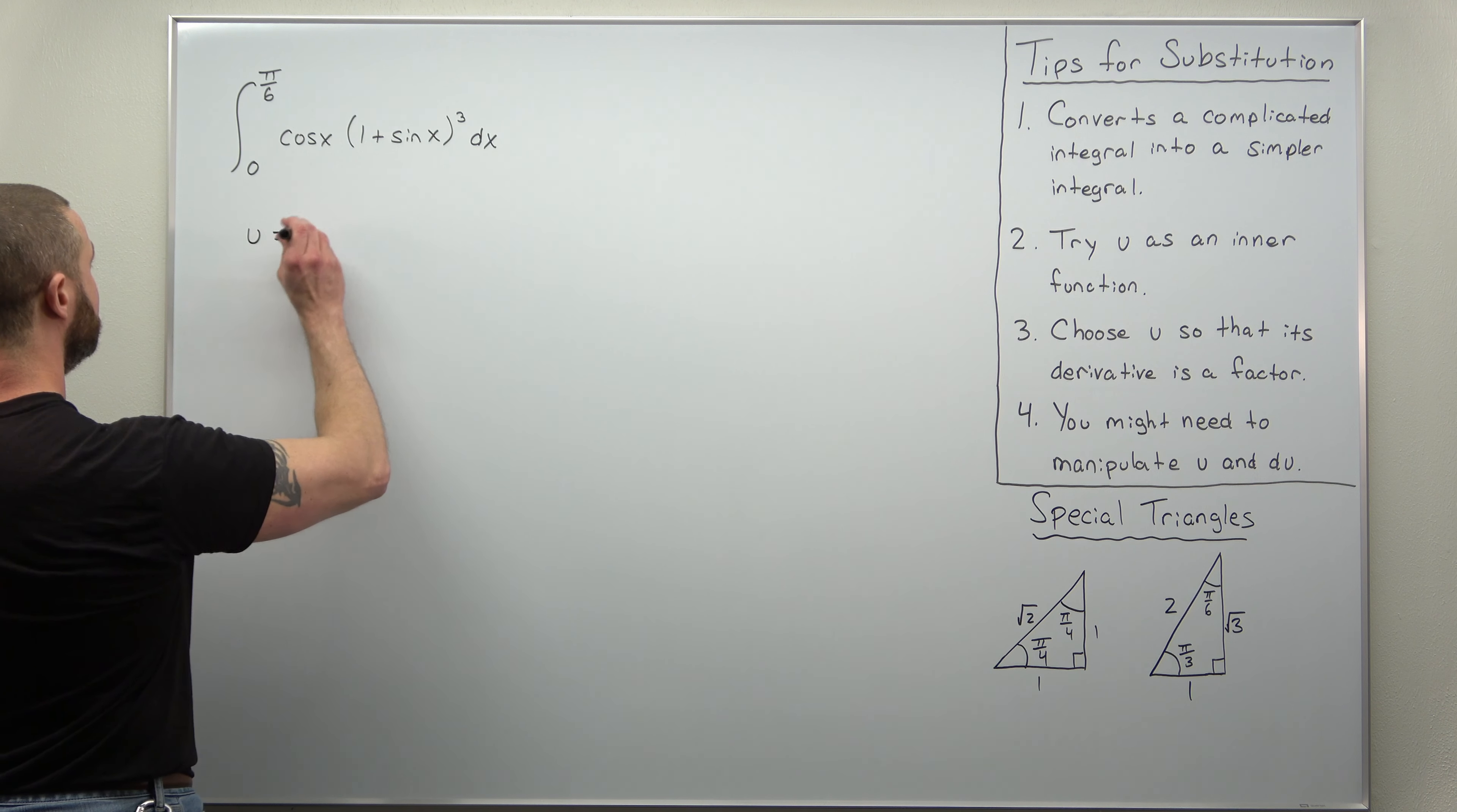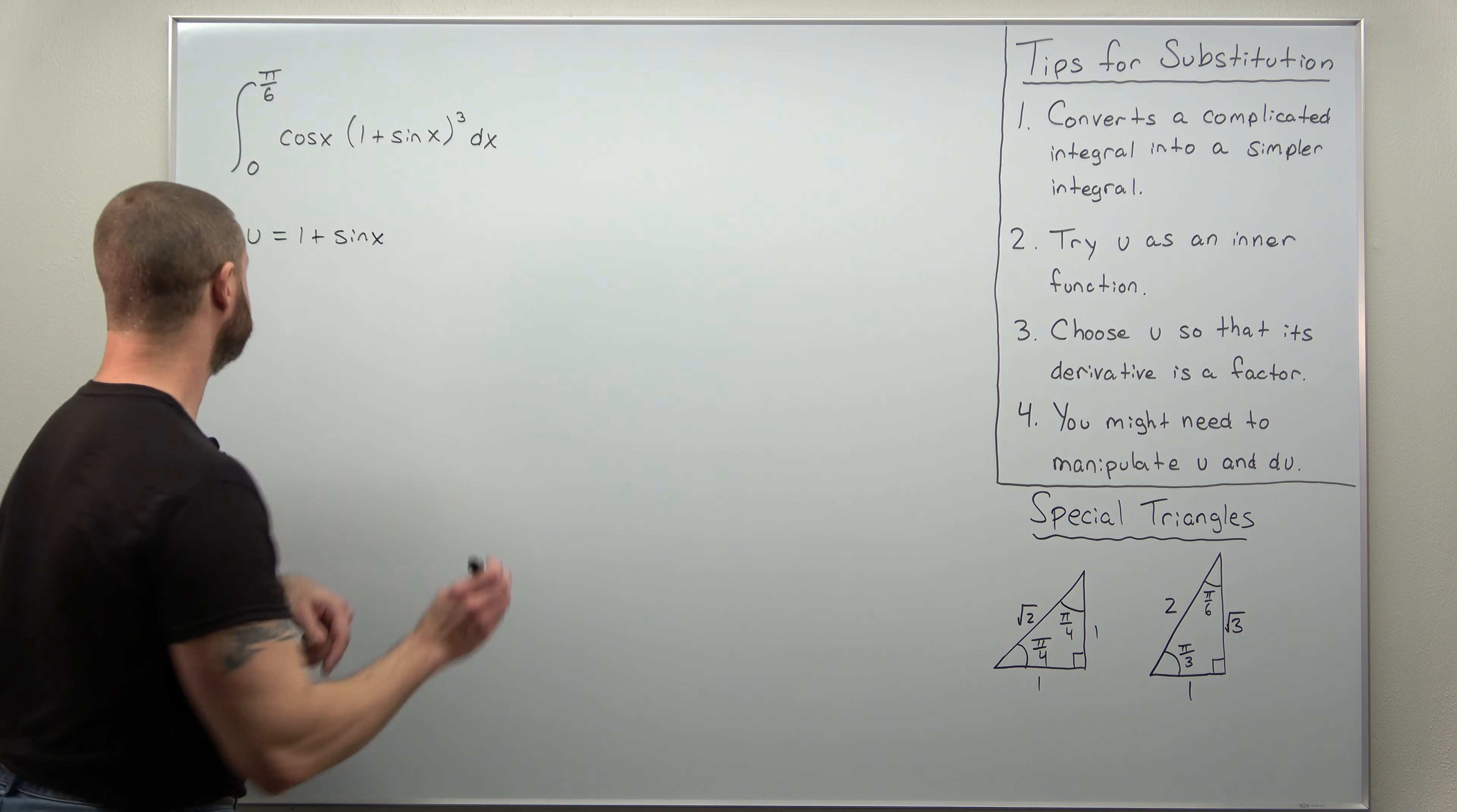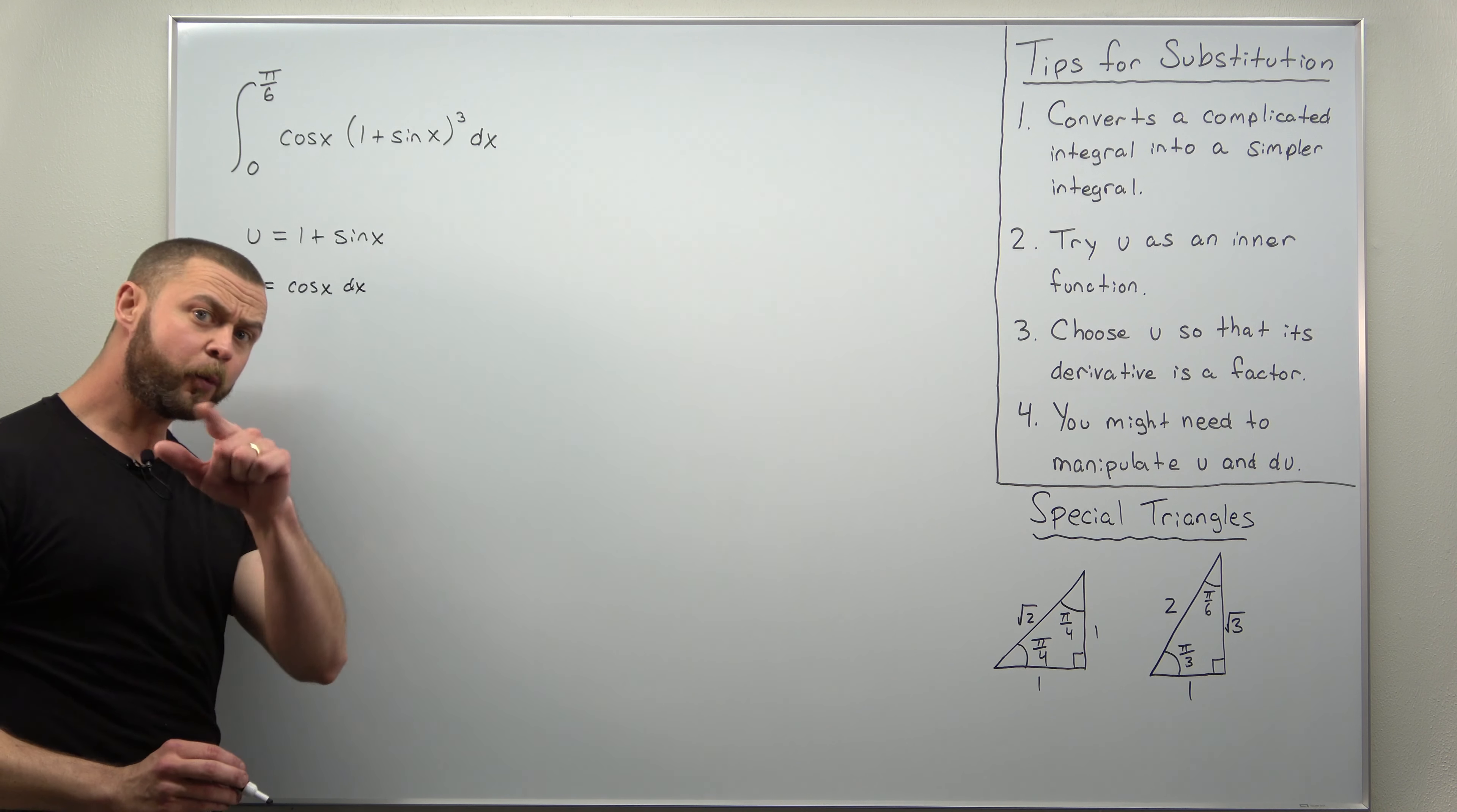So we'll choose u as 1 plus sine of x. That's nice because when we differentiate that for the differential du, we'll get a factor of cosine of x, which is what we want. So du here comes out to cosine of x dx. This substitution seems to work.